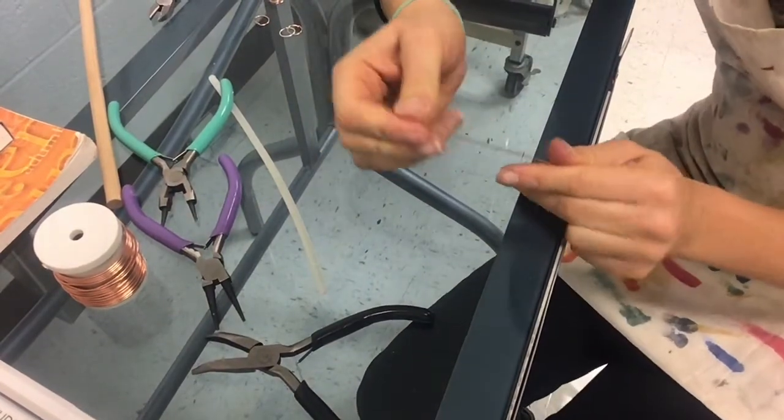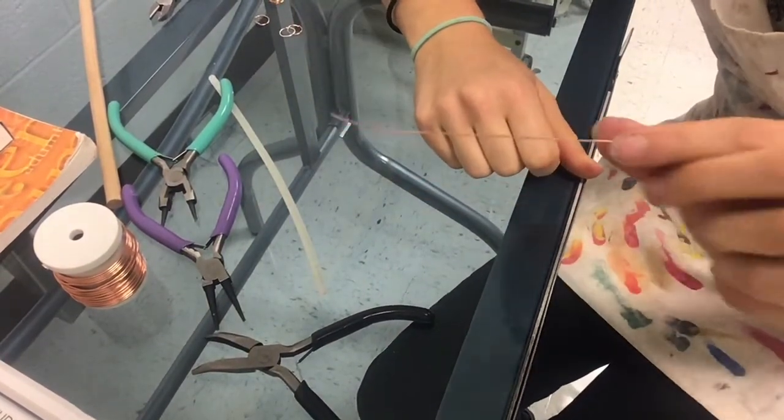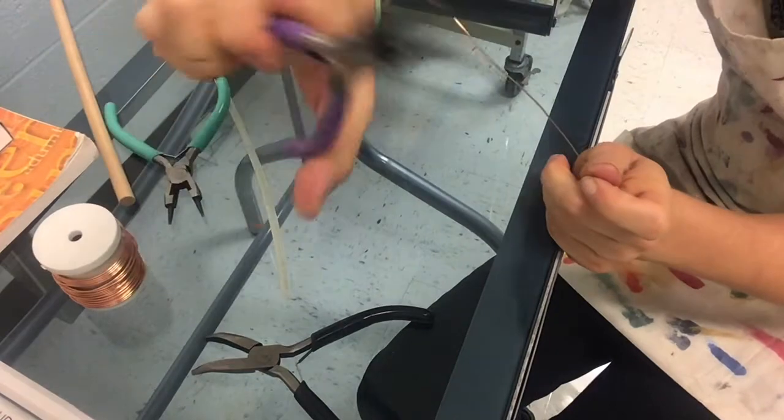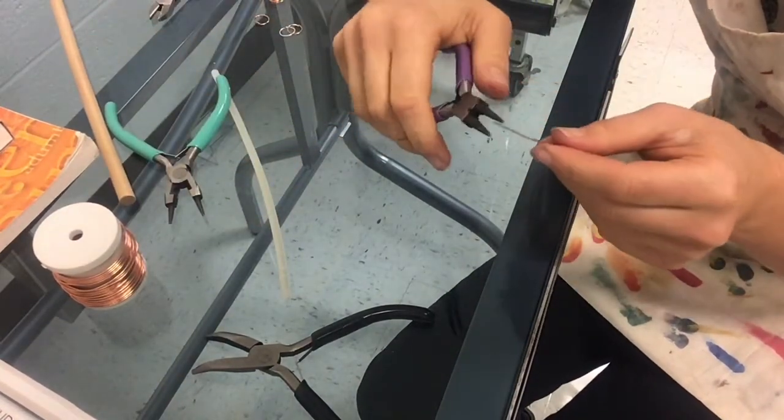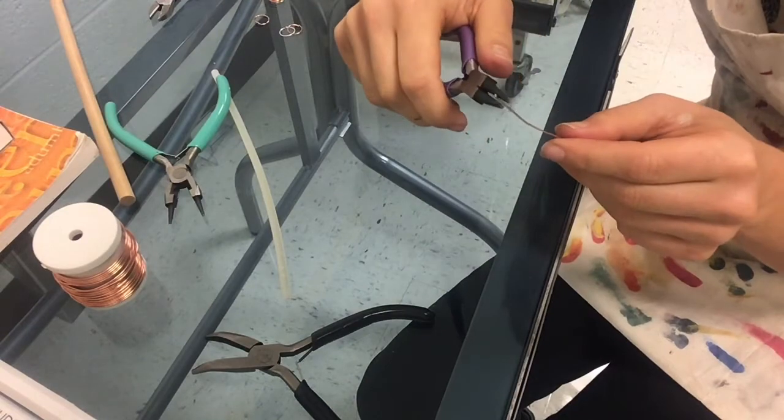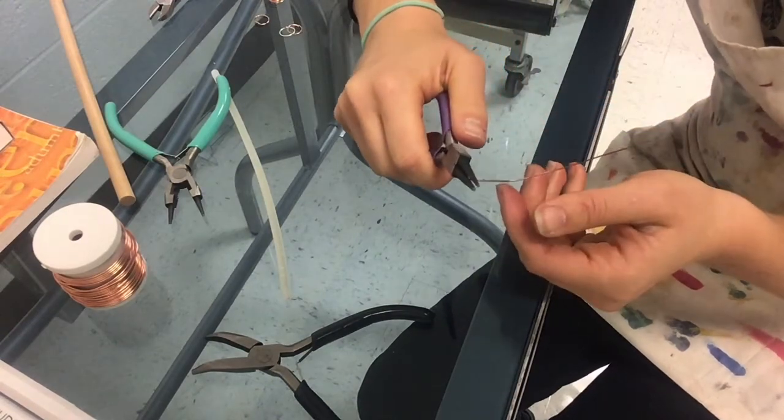Alright. Make figure eight connector. Again, you need a piece of wire, 20 gauge. You're going to grab the needle nose pliers. And what you're going to do is the very first thing you're going to do is you're going to make what is called a P loop.